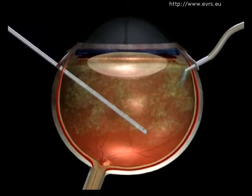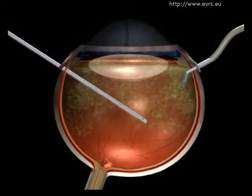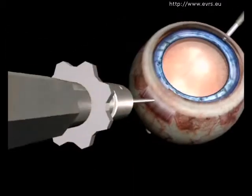First, he will do a vitrectomy, that is, the removal of the vitreous body with the help of a vitreotome, replacing it with an appropriate liquid.